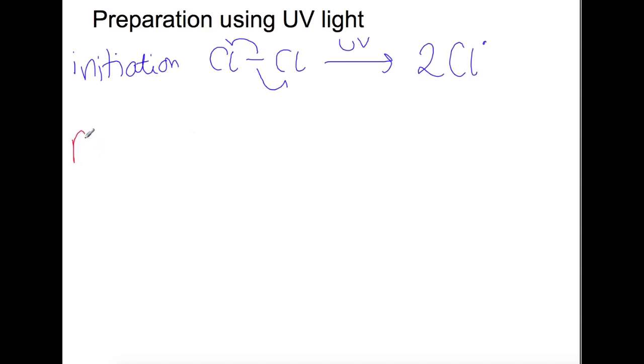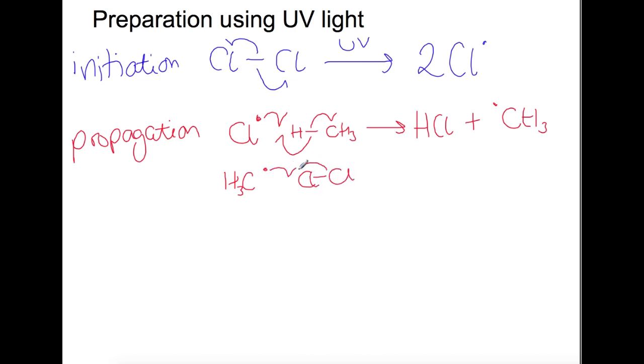The next step is propagation. So here we're going to have a chlorine radical attack a methane molecule. So the one electron comes here, one electron comes from the bond and then the other electron goes to the methyl part. So we end up with HCl and a methyl radical. This methyl radical can then in turn attack a chlorine molecule to produce chloromethane and a chlorine radical. As you can see in each step here we have one radical going in and then one radical being produced which can then carry on the chain reaction.